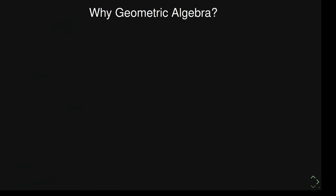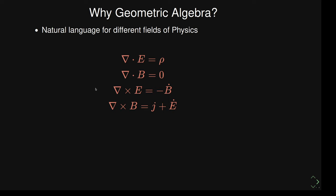Why would you want to learn Geometric Algebra? One thing is that it unifies many different fields of physics and it's kind of a natural language for them. One example: these are the four Maxwell equations in the usual form with vectors — you can see the E and B fields and different kinds of derivatives. If you use Geometric Algebra instead, these all unify to a single equation, where you only have a single field and a single derivative operation.